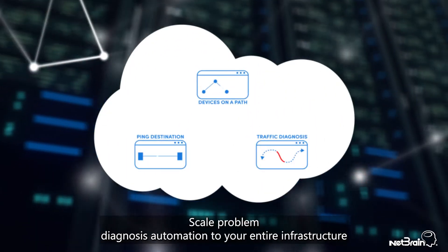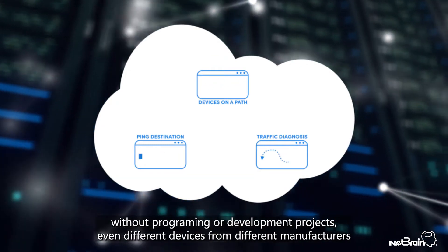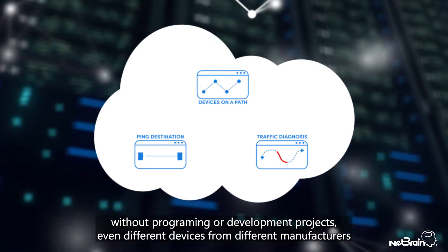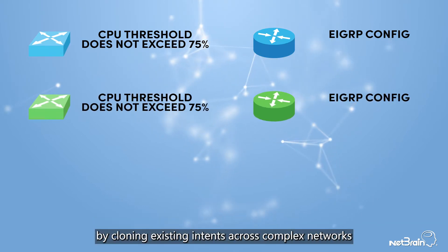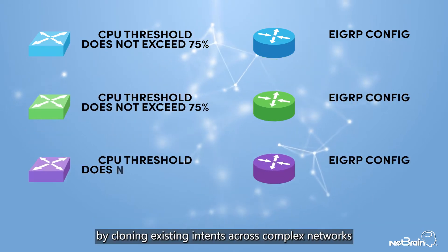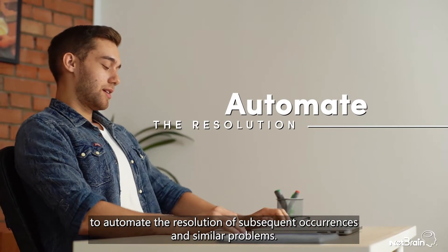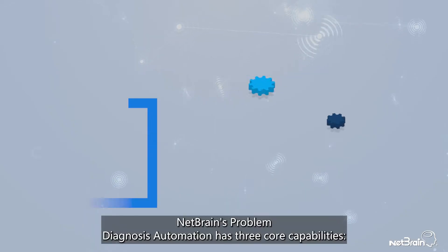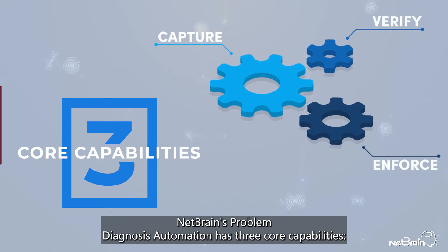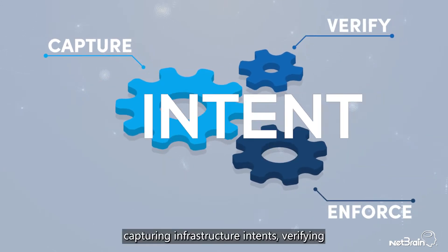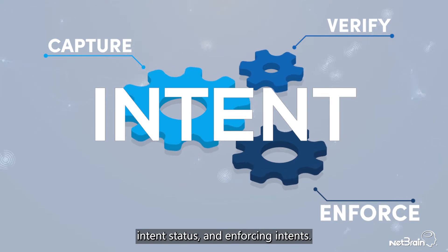Abstracting the underlying network details to translate business intents to network intents, and then ultimately to device configurations. Scale Problem Diagnosis Automation to your entire infrastructure without programming or development projects, even across different devices from different manufacturers, by cloning existing intents across complex networks. NetBrain's Problem Diagnosis Automation has three core capabilities: capturing infrastructure intents, verifying intent status, and enforcing intents.